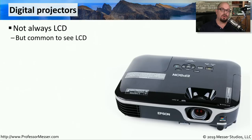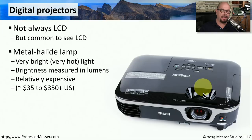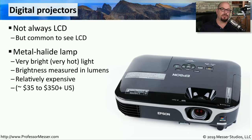If you're in a conference room or large speaking environment, you may see the output from a computer being projected over a digital projector. We sometimes refer to these as LCD projectors, although the technology inside these devices may not necessarily be LCD. The type of lamp inside these projectors has to be very bright. It's very common to see a technology called metal halide lamps, which are of course very bright but also get very hot. It's common to see the brightness of these lamps measured in lumens.